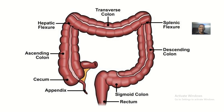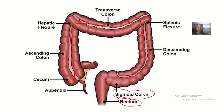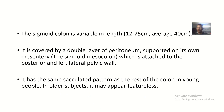The digestive system has a very wide area. You can see we have two listed areas here: the sigmoid colon and the rectum. The rectum is below the sigmoid colon, making the sigmoid colon the second-to-last portion of the human digestive system.